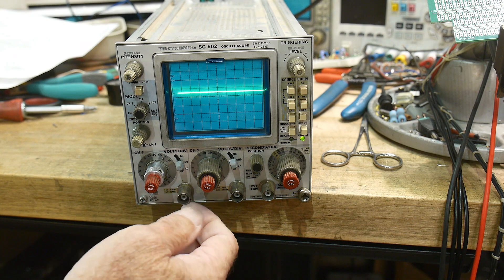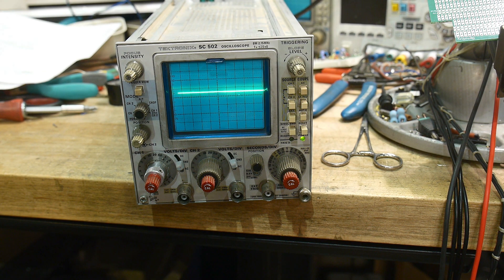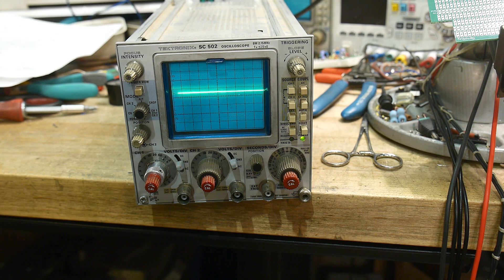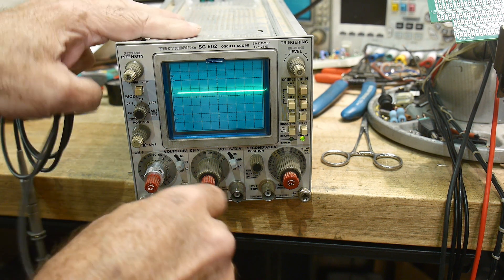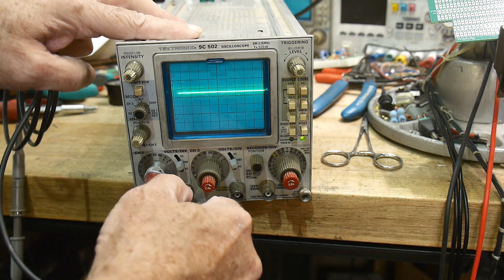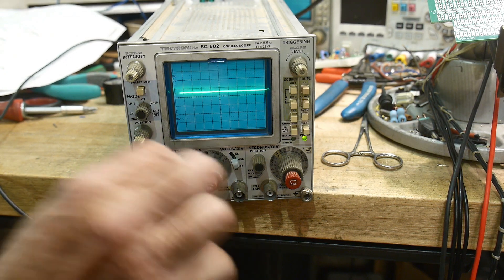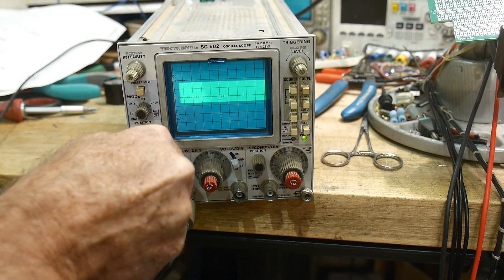Let's put something on the input here and see if it knows how to measure anything. I probably should hook this up differently, but just for now, let's just hook this up. All right. Let's put on DC here.